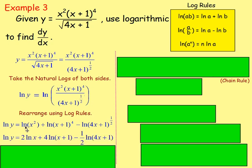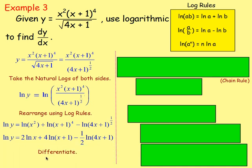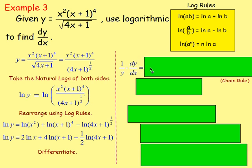Bringing the indices down: ln(y) = 2·ln(x) + 4·ln(x+1) − (1/2)·ln(4x+1). Now it is in a form that is very easy to differentiate. Differentiating ln(y) gives 1/y · dy/dx. Differentiating 2·ln(x) gives 2·(1/x); differentiating 4·ln(x+1) gives 4·(1/(x+1))·1, using the chain rule.